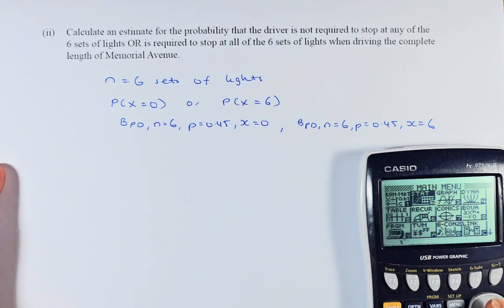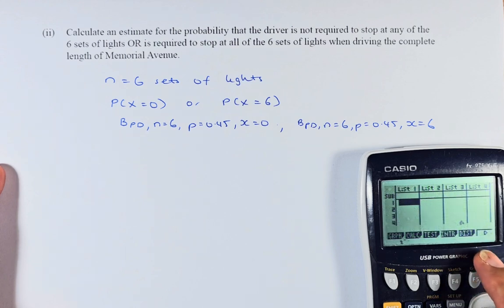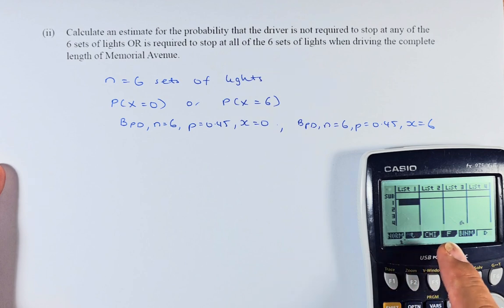So what we are going to do is go to statistics, execute. Then you go to distribution, F5 is distribution. Now it's binomial. First is normal, t, chi-squared, F test, and binomial. So binomial, F5, press the F5 button.